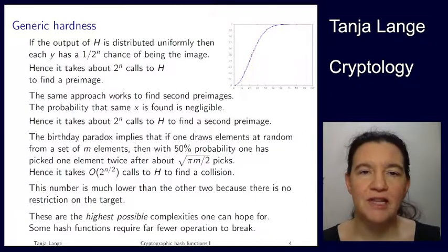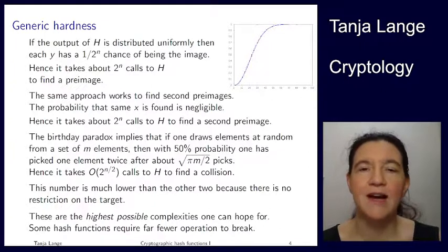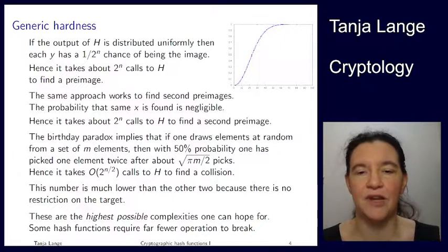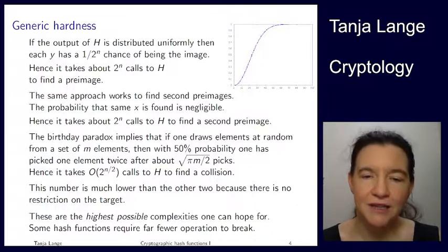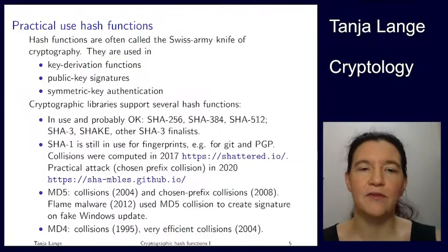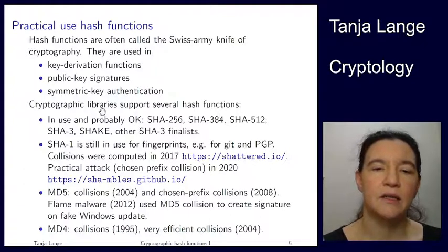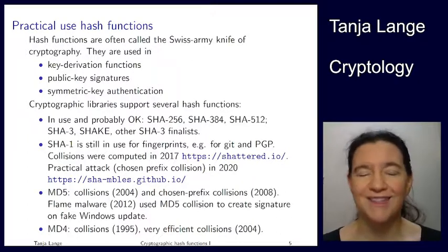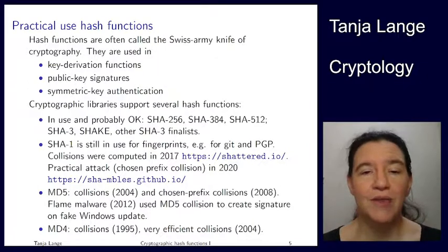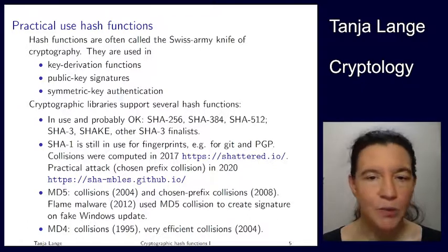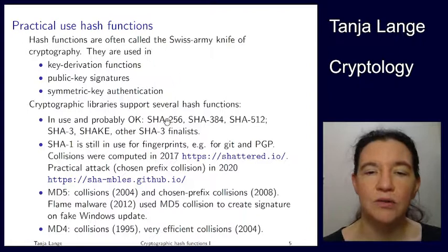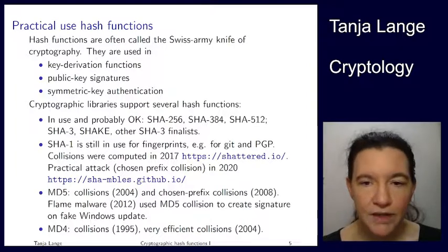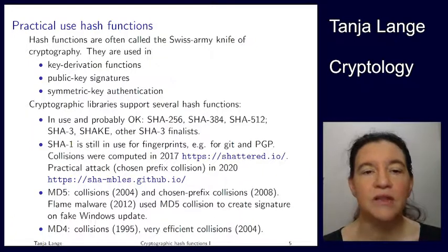To sum up this introductory lecture about hash functions: these are the highest possible complexities we can hope for — this is idealized. On the next slide, I'm showing you what the current state of the art is. The SHA2 family — those are in use and probably okay. In cryptography there is no certainty, so 'probably okay' is the best I can offer unless something is absolutely proven secure. These ones are in use and we don't see any weakness. The numbers — 256, 384, 512 — give you the length of the output, giving you the N. Nothing really small happens there.